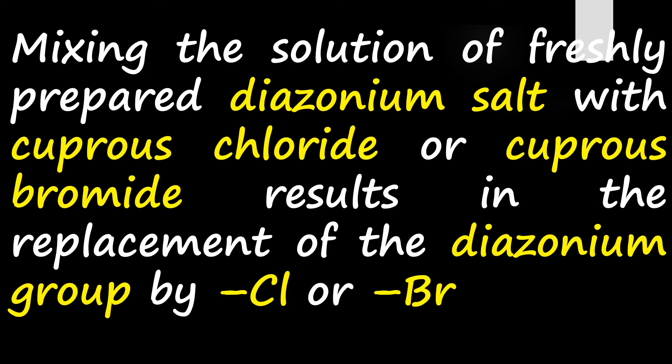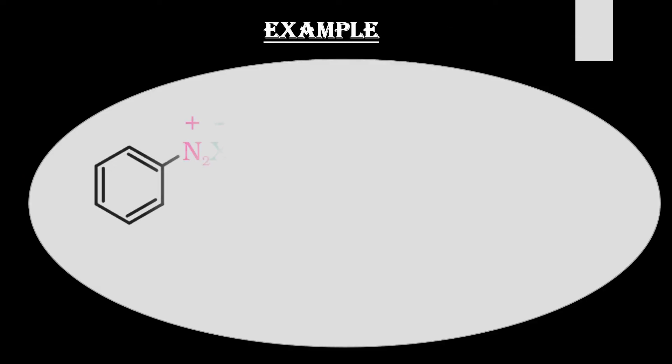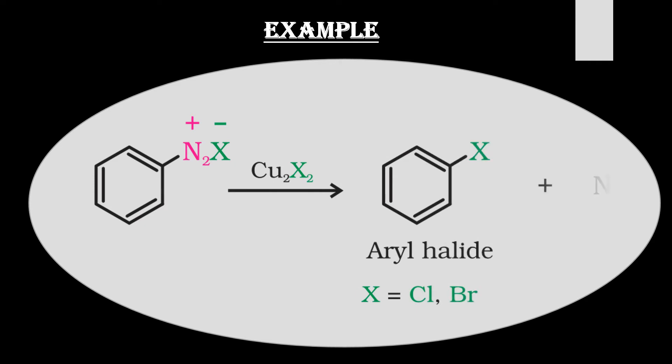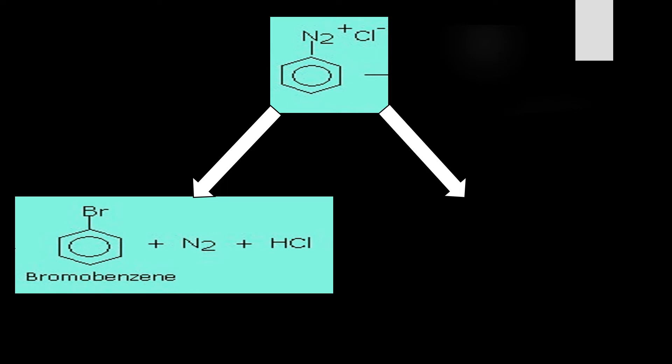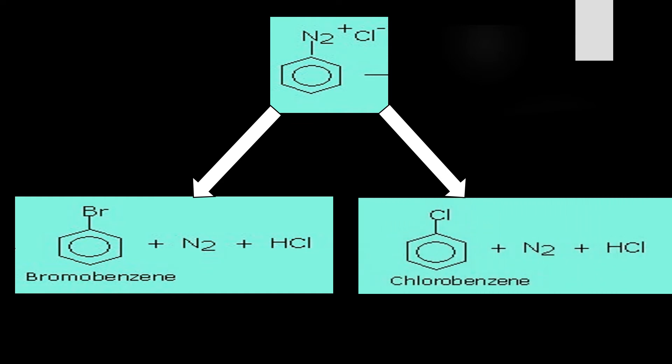When aromatic diazonium salt is treated with cuprous halide, we get aryl halide — where X may be chlorine or bromine, giving chlorobenzene or bromobenzene. The byproduct is N2 nitrogen gas. When diazonium salt is treated with CuBr in the presence of HBr, we get bromobenzene. When treated with CuCl in the presence of HCl, we get chlorobenzene, with byproducts N2 and HCl.